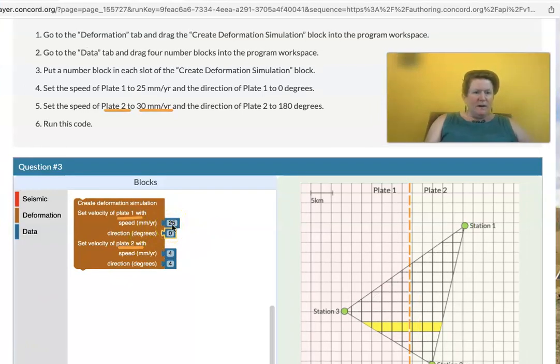I've set the speed at plate one and I've also set it to zero degrees. Plate two we're going to set to 30 millimeters per year and then we'll set it also to 180 degrees. So 30 millimeters and 180 degrees for plate two.